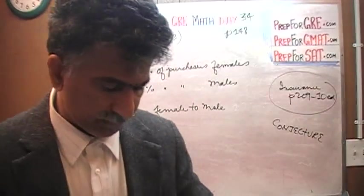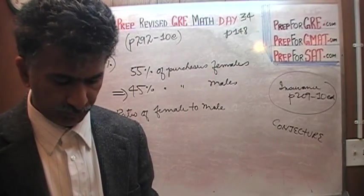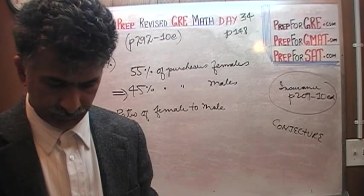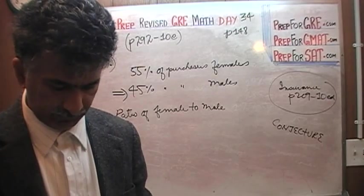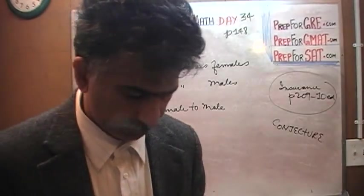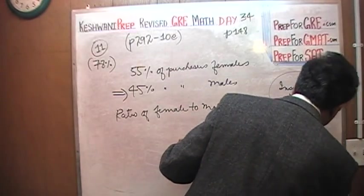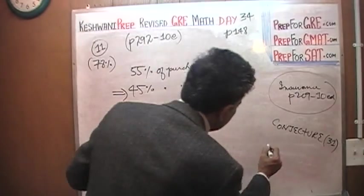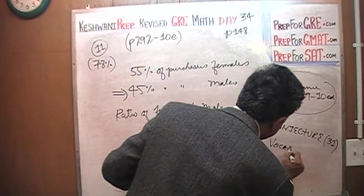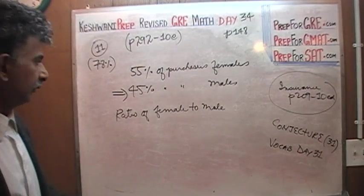And I was trying to see if I actually covered the word conjecture, which I believe I did, but right now I cannot find out what day it was. So I cannot tell you which day to watch precisely. Because there are too many words starting with C. Oh, I found it. What do you know? Day 31. Just type in Keshwani Prep vocab day 31, and you will learn the word conjecture along with some other words.